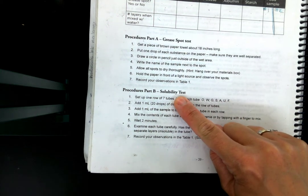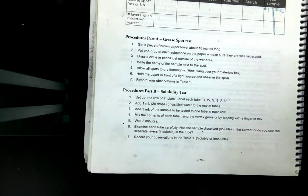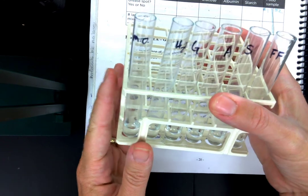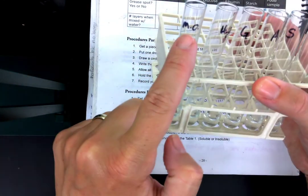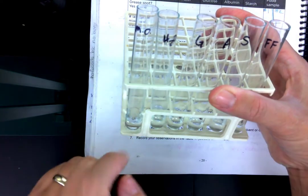Now we're on to this one called the solubility test for lipids. We get to use test tubes like this. And what I've done on the test tubes is I've labeled them. This is mineral oil, water, glucose, albumin, starch, and french fry.